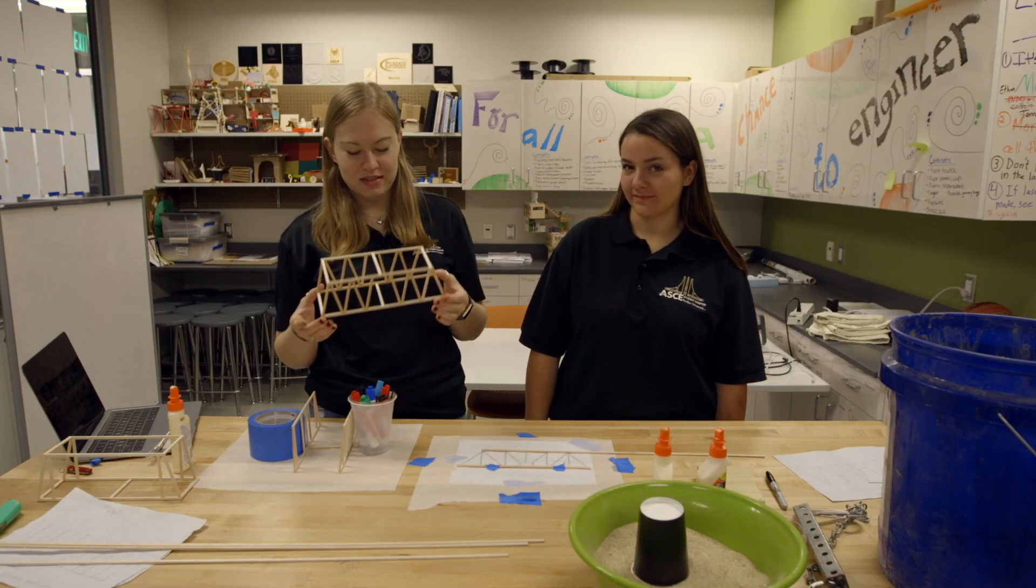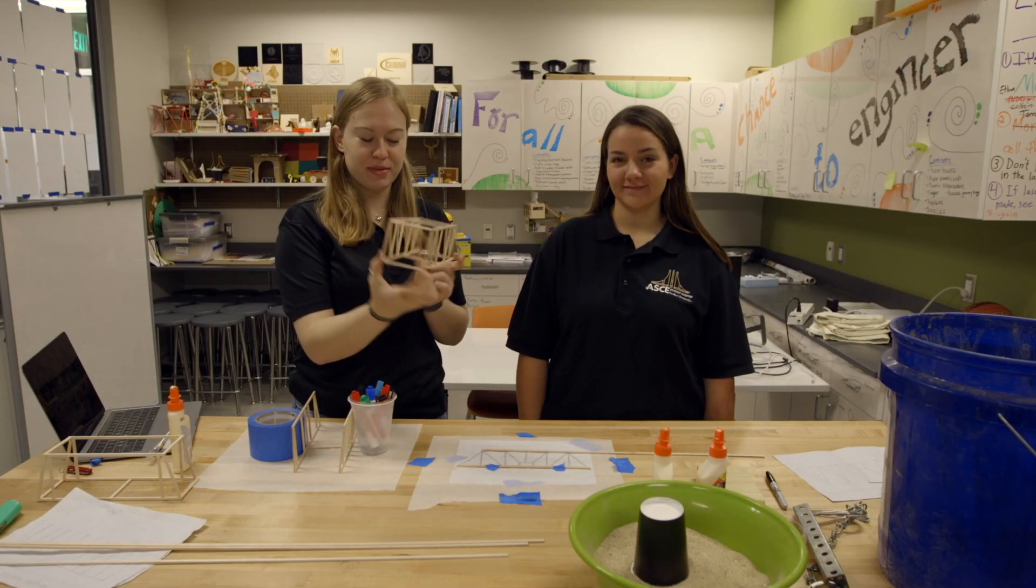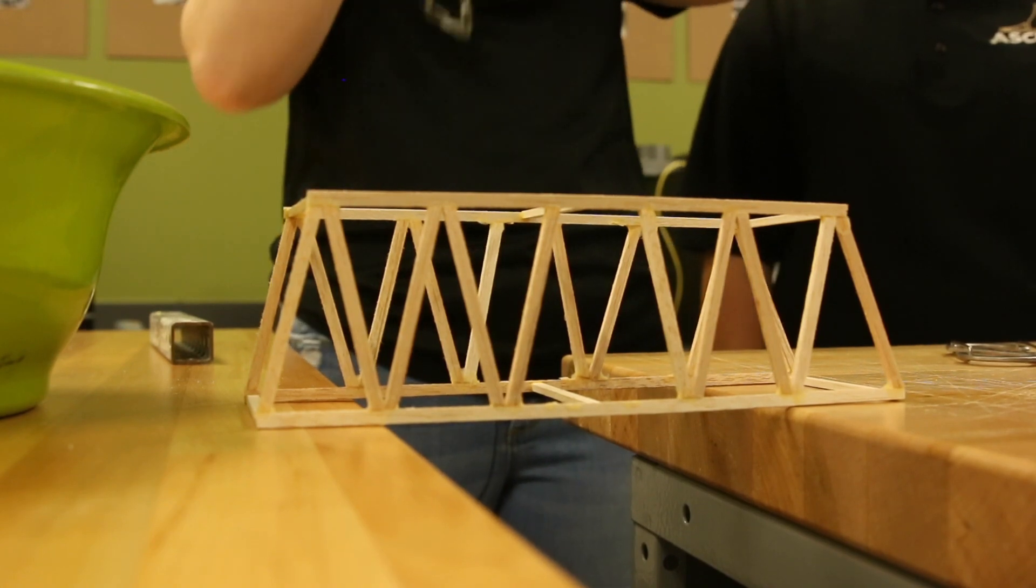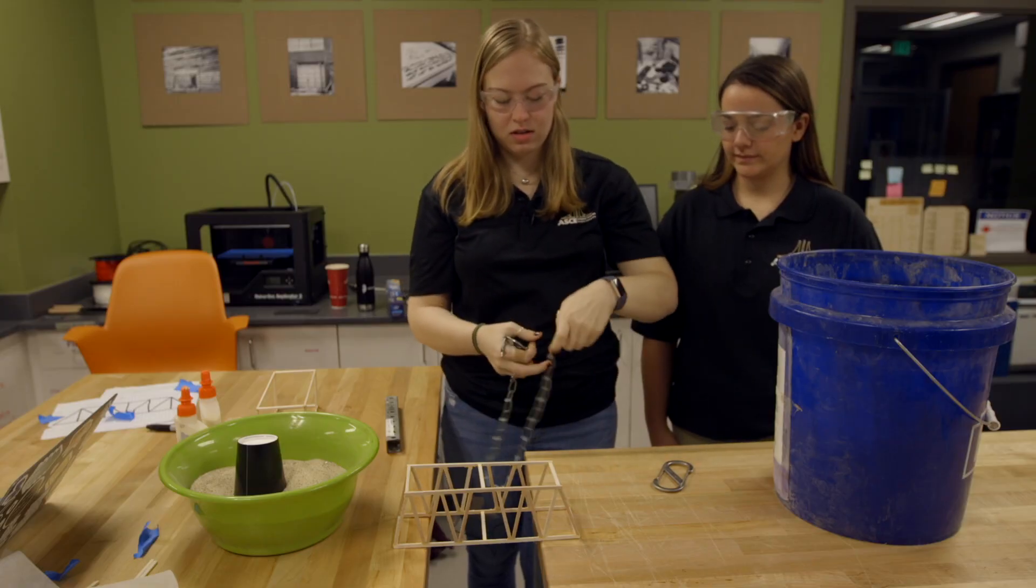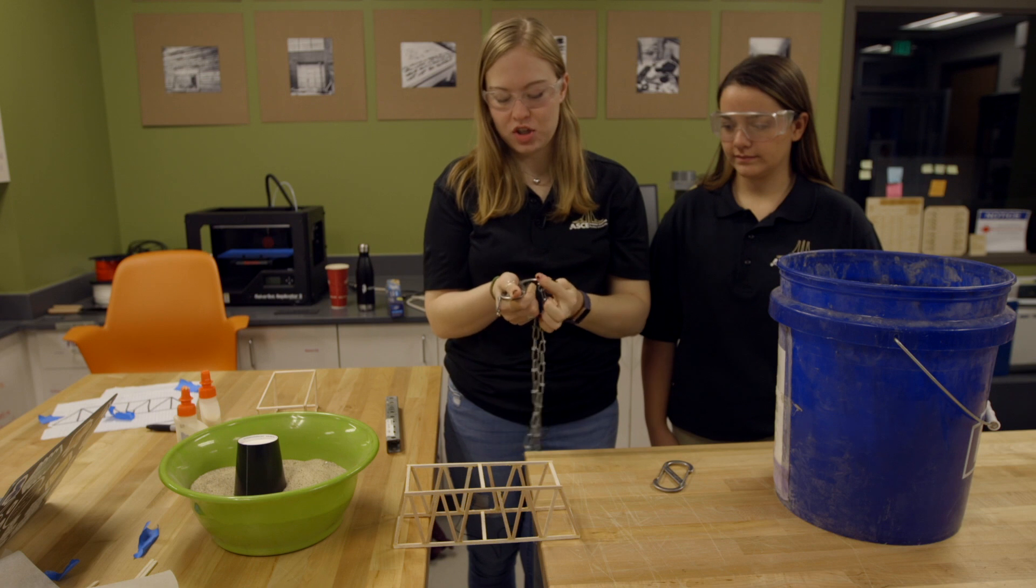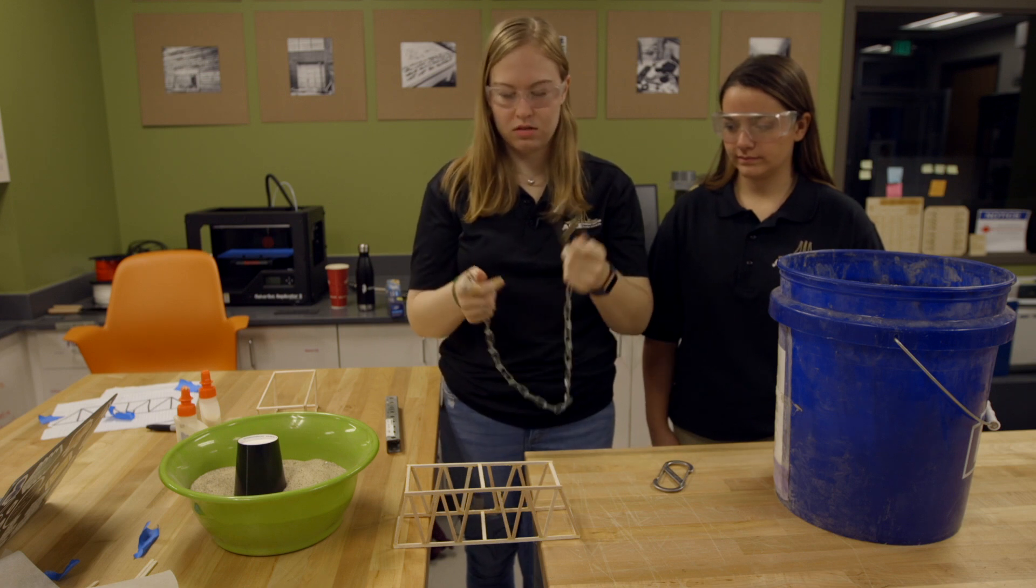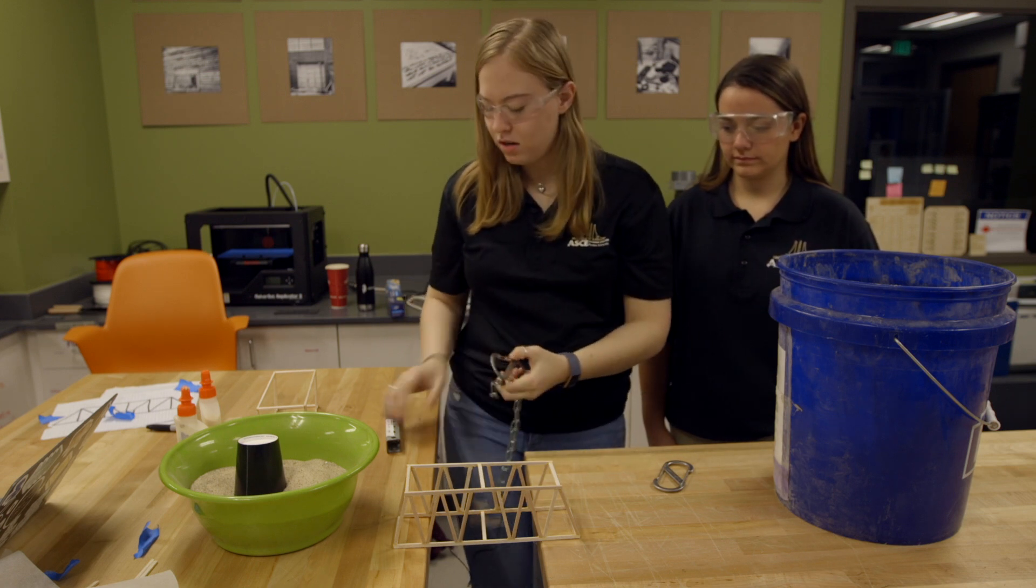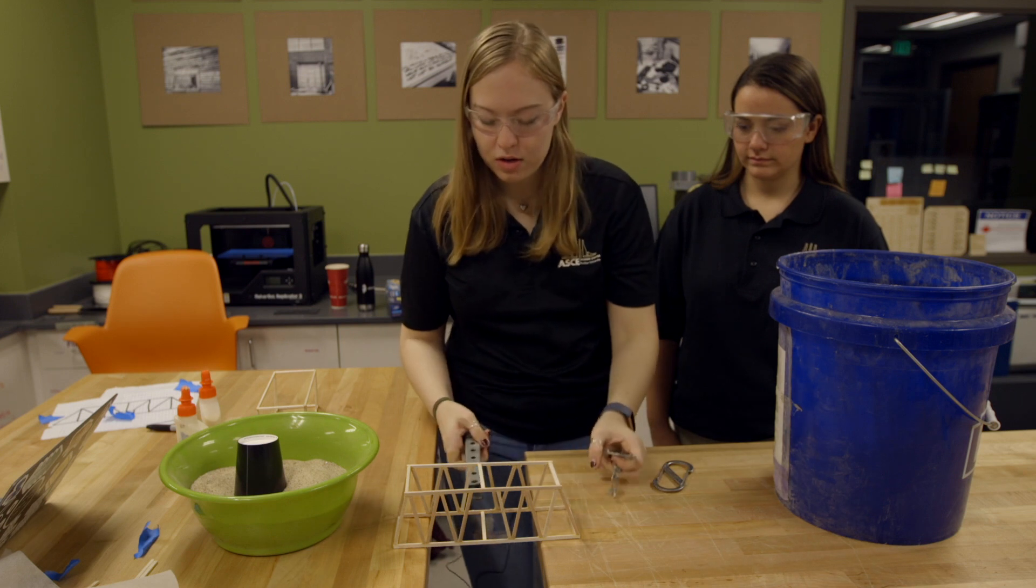Now that it's finished, we have our bridge. At the event, we're going to use these materials to test your bridges. Now we're going to hook this chain up through one of these S hooks, then we're going to put this bar through the bridge.